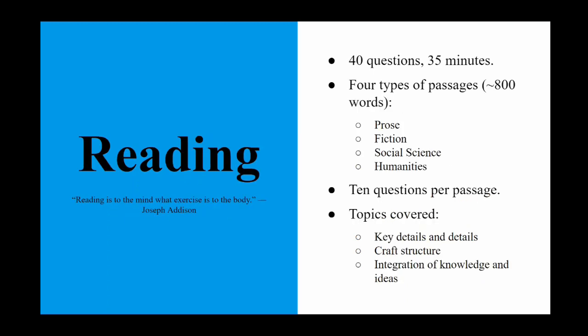The reading test comes next. It's 40 questions in 35 minutes. There are four types of passages, each about 800 words: prose, fiction, social science, and humanities. The order of passages should be the same from test to test. There are 10 questions per passage, though this has occasionally changed. The reading section covers key details and details, craft structure, and integration of knowledge and ideas.